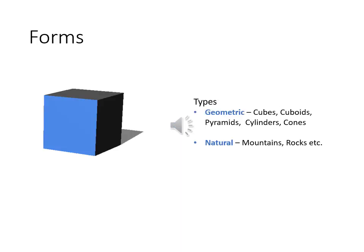Form is the three-dimensional aspect of any object, defined by height, length, and breadth. We use this in our 3D compositions. There are again two types of forms: geometric forms such as cubes, cuboids, and pyramids, and natural forms like mountains, rocks, and anthills — things we openly find in nature.